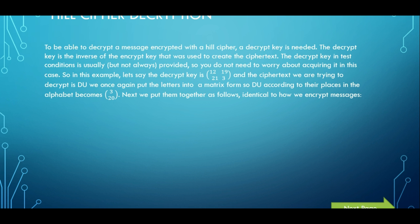basically a decrypt key is needed. Now a decrypt key is the inverse of the encrypt key that was originally used to create the ciphertext to begin with. Now usually a decrypt key in test conditions is supplied, but there are times when there isn't and there actually is a whole question when you just try to obtain the decrypt key which is a complicated process, but that's not what this video is about. We're just going on to how to decrypt the message if there was already supplied to us. So let's say that the decrypt key was 12, 19, 21, and 3 as shown right here. That is our matrix decrypt key.